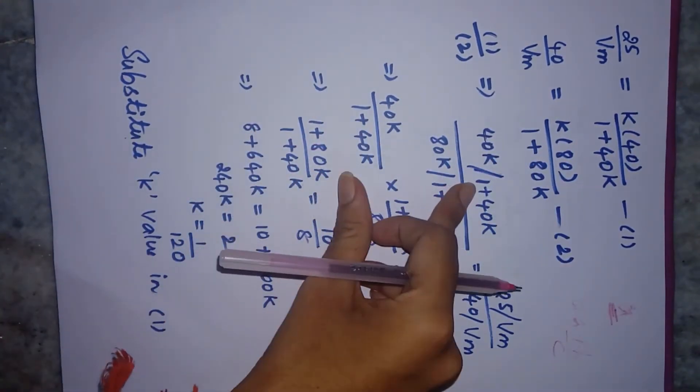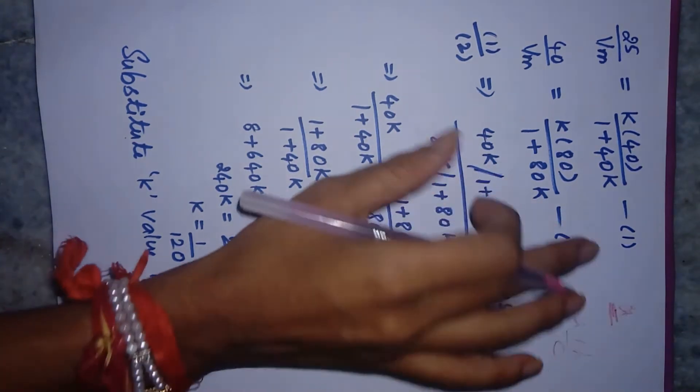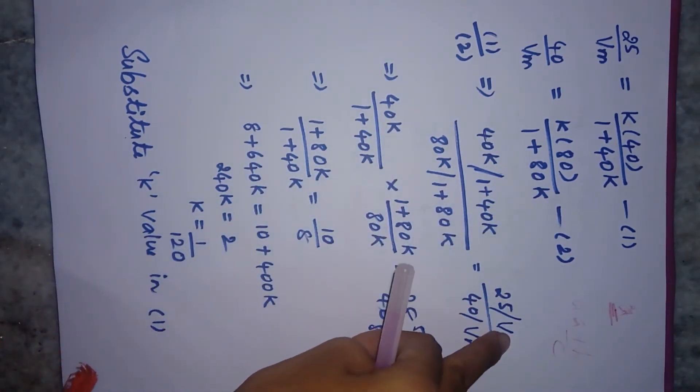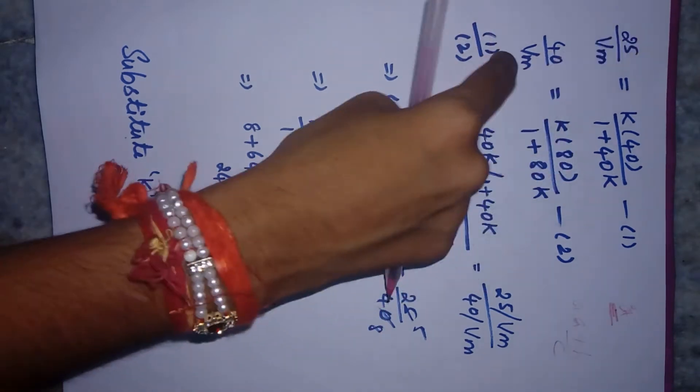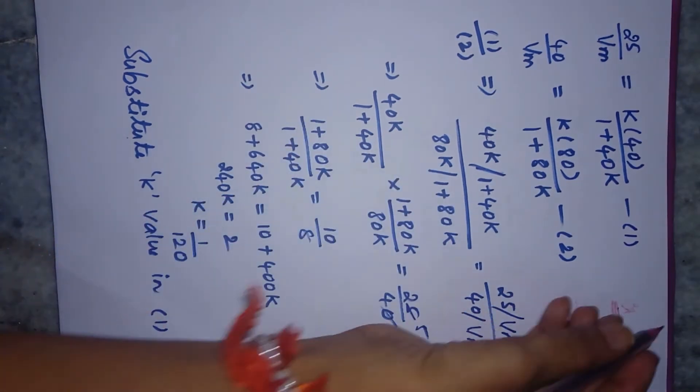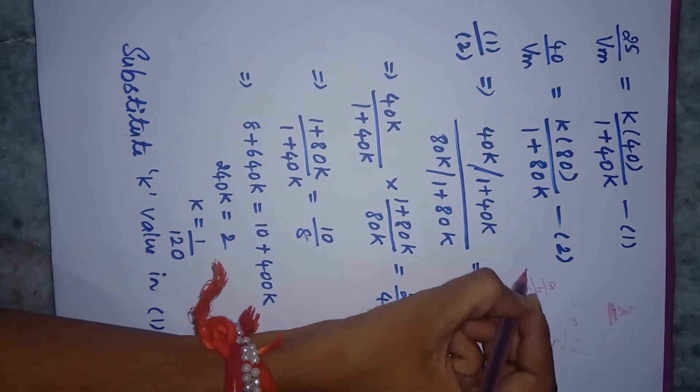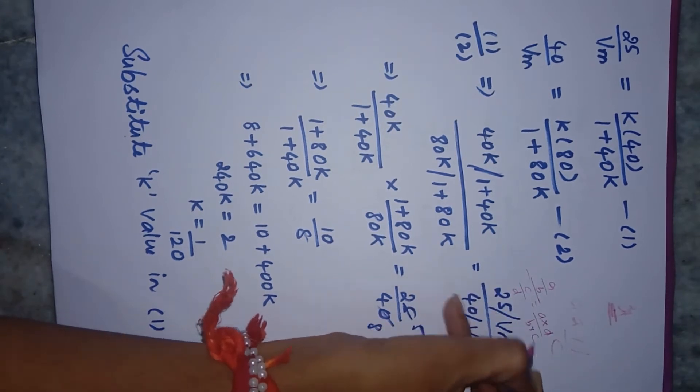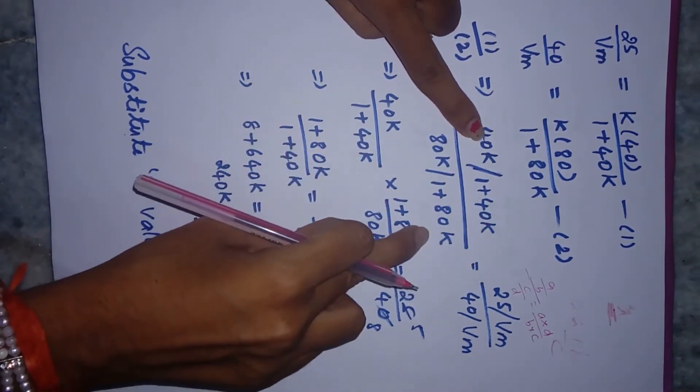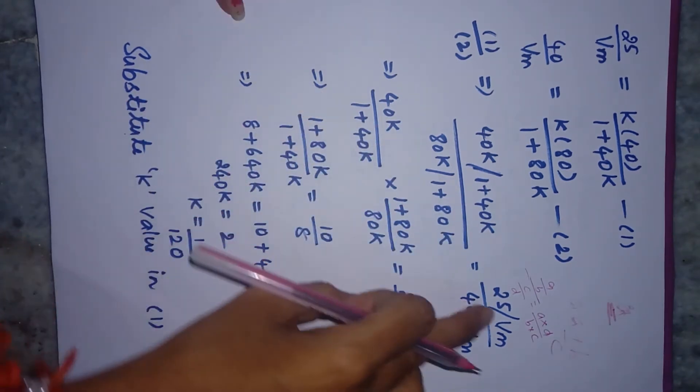I've done every step so everyone can follow. Dividing these two equations: (25/Vm)/(40/Vm) = [(40K)/(1+40K)]/[(80K)/(1+80K)]. When dividing fractions, this becomes [40K × (1+80K)]/[80K × (1+40K)] = 25/40. The Vm cancels out.